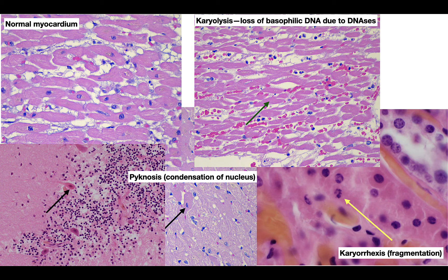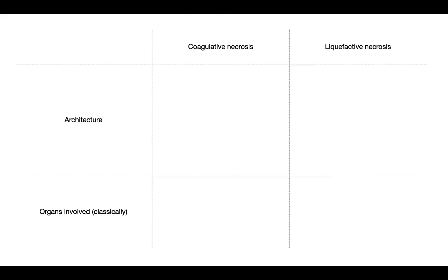The nuclear changes that you see with necrosis are illustrated here. In the top left corner you can see normal myocardium with normal nuclei. To the right is karyolysis, where the nuclei become pale and fade out — that's from loss of the basophilic DNA due to DNases. Bottom left is pyknosis, basically condensation of the nucleus. The far left corner shows the cerebellum — a Purkinje cell with eosinophilic cytoplasm and a rounded condensed nucleus. To the right is myocardium with an arrow showing a pyknotic nucleus. Then to the right is karyorrhexis, or fragmentation of the nucleus. So karyolysis, pyknosis, and karyorrhexis are the nuclear features that occur with necrosis.